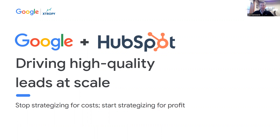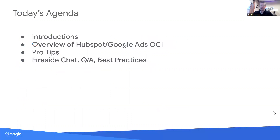If we get stragglers to show up, great; if not, we'll mail them the deck. Let me jump right in — we'll make some quick introductions, then have Mike walk us through an overview of HubSpot Google OCI, which stands for Offline Conversion Import. I'll share some pro tips on what we've seen, and then we'll open it up to chat.